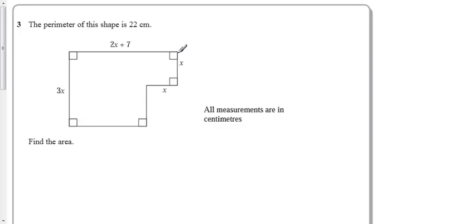Problem is we've got some algebra involved in here. Let's make an expression for the perimeter and make it equal to 22 first, and then see if we can work out what x is. That might help us to find the area.